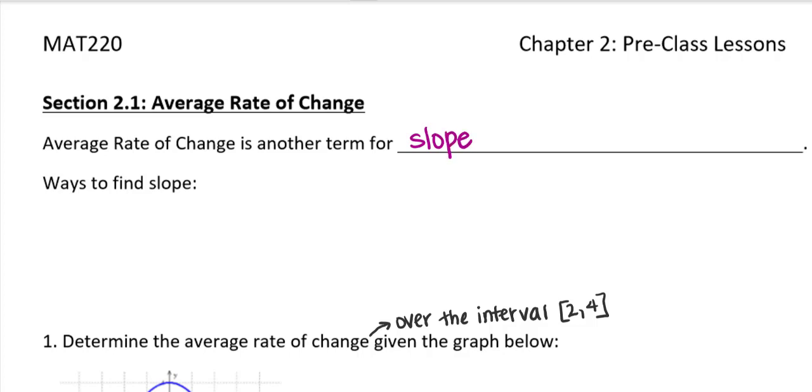So when you studied slope in previous courses, there were a few different ways that you could look at it. It was almost always defined to be m equals, that is the variable or letter chosen to represent slope. So you might remember y equals mx plus b, slope intercept form, things like that.